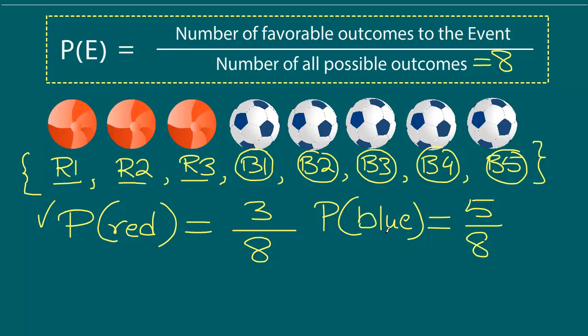Similarly, for picking a blue ball — the second question — there are 5 blue balls. So the numerator is 5 and the denominator is the total 8 balls. The probability of picking a blue ball is 5/8.